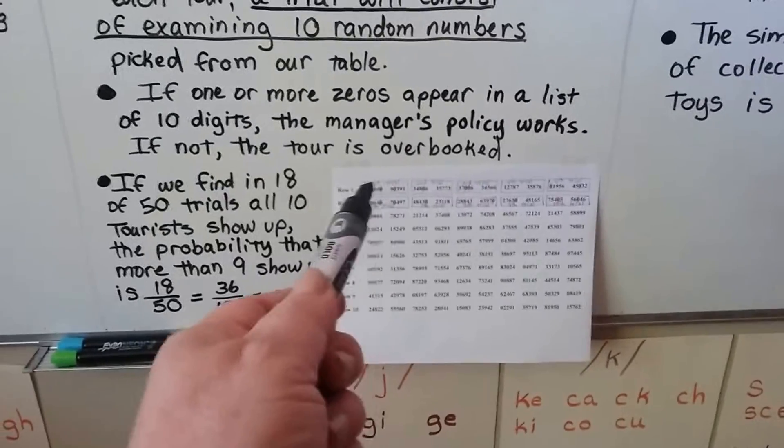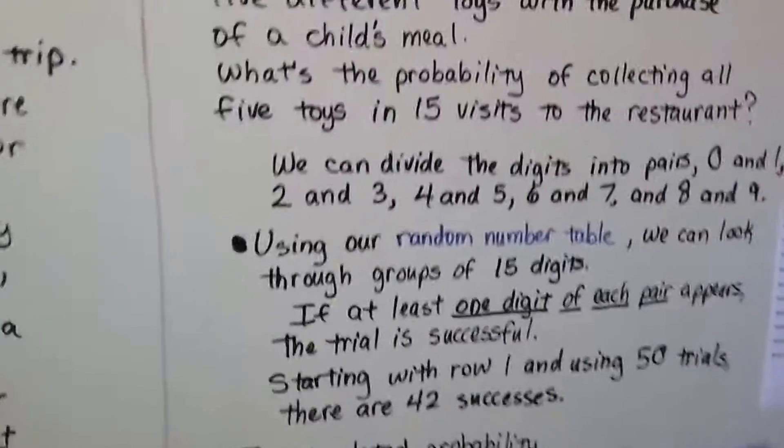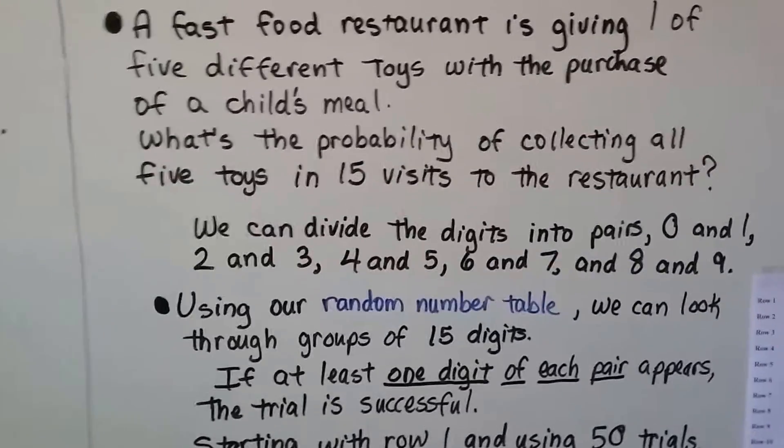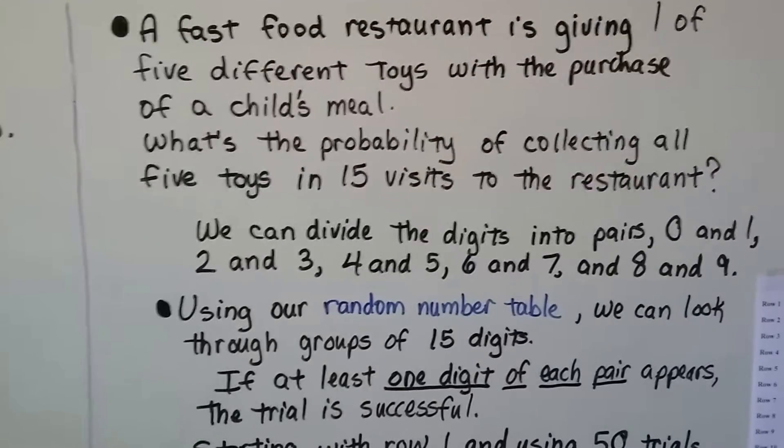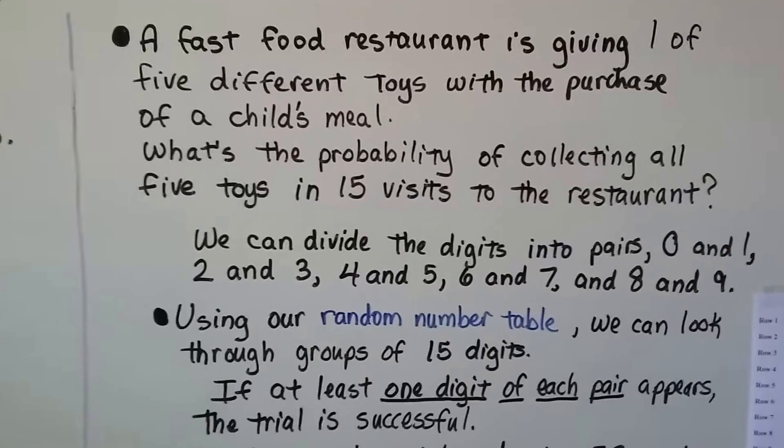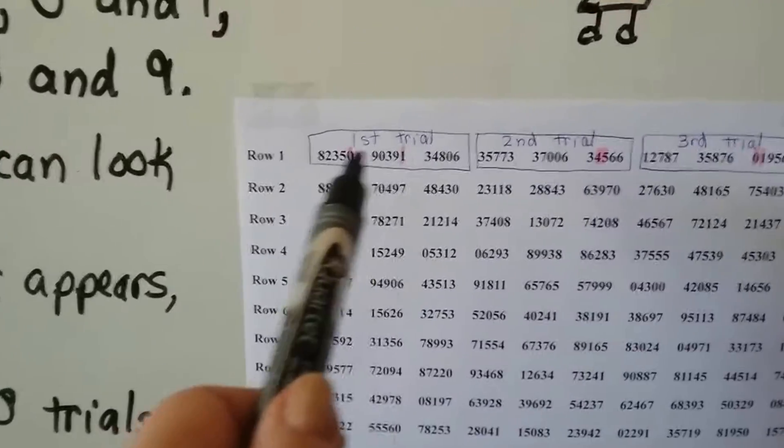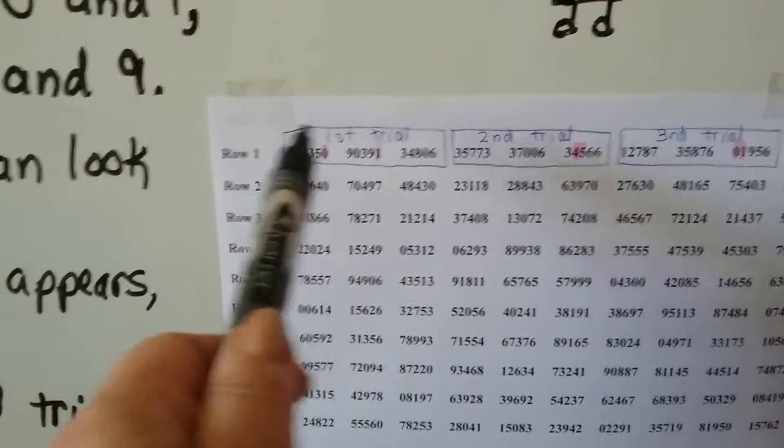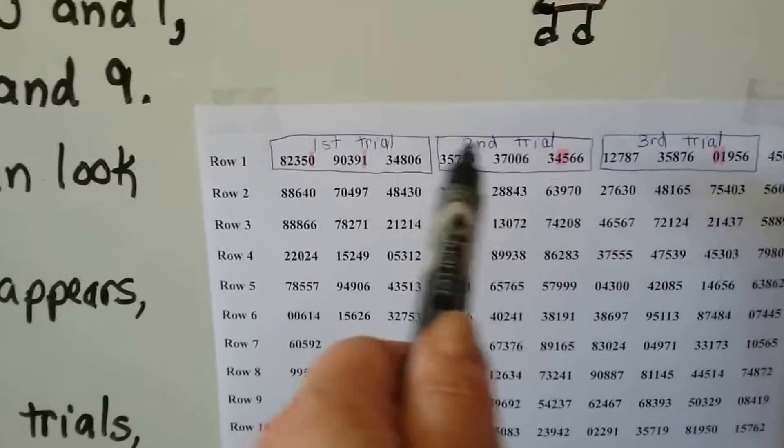So that's how we can use this. We can say, we'll just group two of these together to be 10 digits. A fast food restaurant is giving one of five different toys with the purchase of a child's meal. What's the probability of collecting all five toys in 15 visits to the restaurant? So now because we're going to do 15 visits, what we're going to do is, we're going to group three of these five digit numbers together. So that would be the first trial. That would be the second trial.